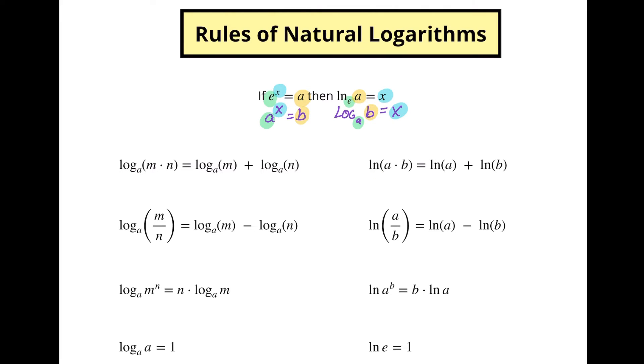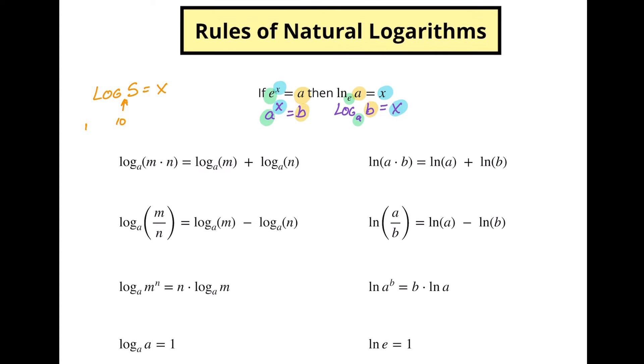And notice here also, we've talked about in previous videos, we've got log of 5 is equal to some number—this thing is assumed to be base 10. We always assume it to be base 10 if we don't write it. Now with natural logarithms, we just always assume it to be base e. So if you see ln and there's no base written there, just know that it means there's a base e. Just like when we write log, we know that there's a base 10 assumed.